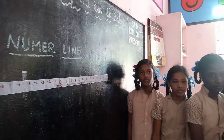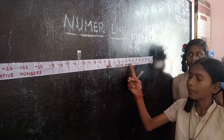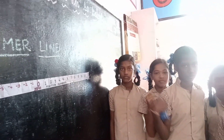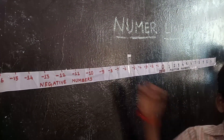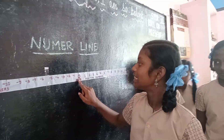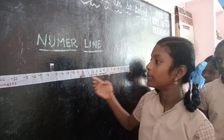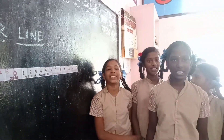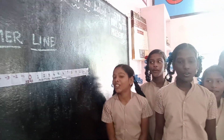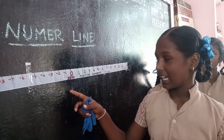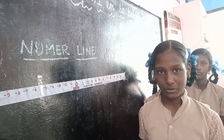Yes, very good. To the right of zero, what numbers are represented on the number line? Positive numbers. Yes, very good. To the left of zero, what numbers are represented on the number line? Negative numbers. Yes, very good. Where is zero represented on the number line? Between positive numbers and negative numbers. Is zero a positive number? No. Is zero a negative number? No. Then what is zero on the number line? Zero is neutral.